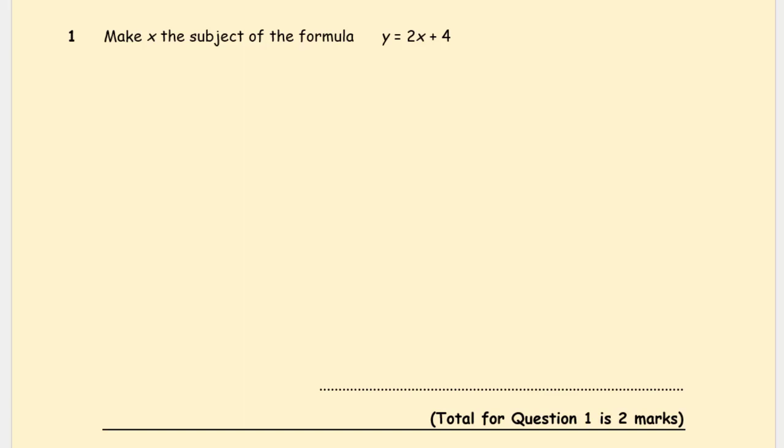So let's have a look at the first question: make x the subject of the formula y = 2x + 4. We need to make x the subject, so that means we need to write x equals. That means we need to isolate x and get rid of everything that is on the same side as x.